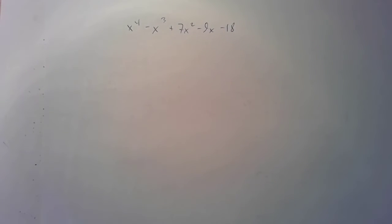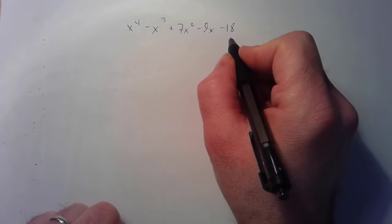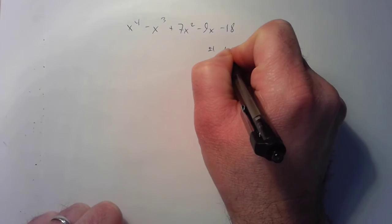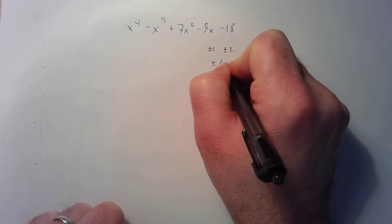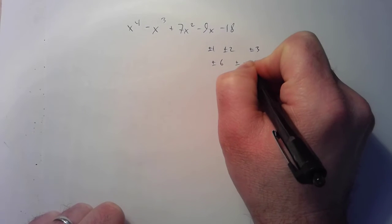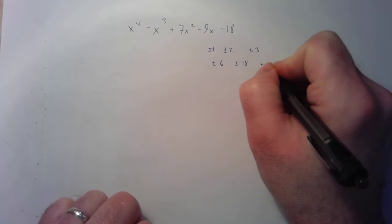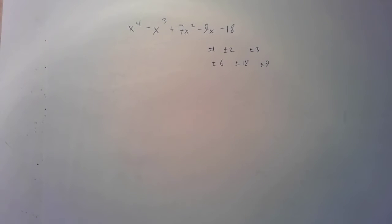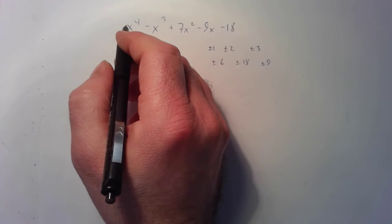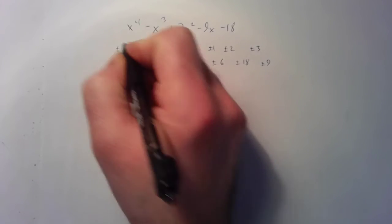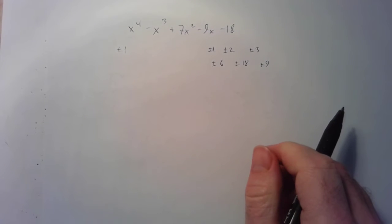The way that these problems always get solved is you've got to start with rational zeros. Negative 18's factors are plus or minus 1, plus or minus 2, plus or minus 3, plus or minus 6, plus or minus 9, plus or minus 18. The leading coefficient is 1, so it's just plus or minus 1. So those are all the options — all 12 of them.